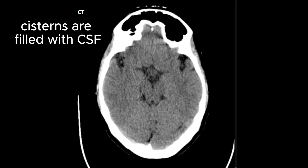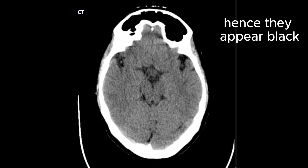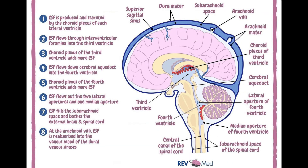I have stated multiple times that the cisterns are filled with CSF. So where does this CSF come from? Before we start discussing the ventricular system on CT scan, let's revise the CSF flow pathway. In adults, approximately 400–600 ml of CSF is produced by the choroid plexus located mainly in the lateral ventricles and partly in the fourth ventricle.